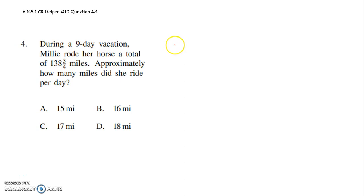All right, 6th graders, this is to help you with question 4 on CR10. It says, during a 9-day vacation, Millie rode her horse a total of 138 and 3/4 miles. Approximately how many miles did she ride per day?